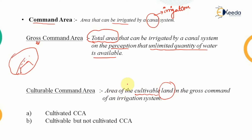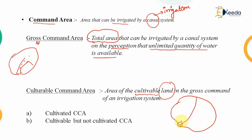Within the total area there is a certain portion which is cultivable — that means there is farmland available that can be cultivated if suitable arrangements are made. That is known as the culturable command area, or in short, CCA. The total area under consideration is known as the gross command area, and out of this, only the portion where cultivation can be carried out is the CCA.